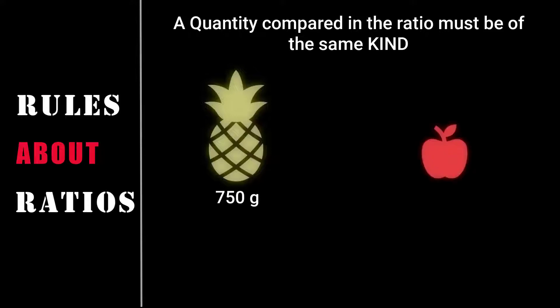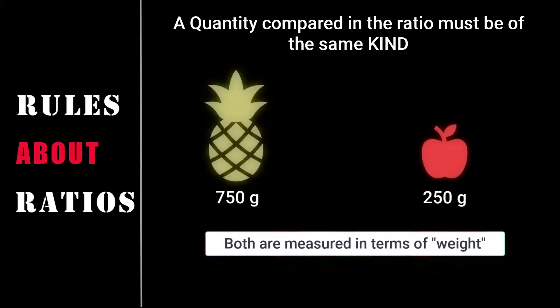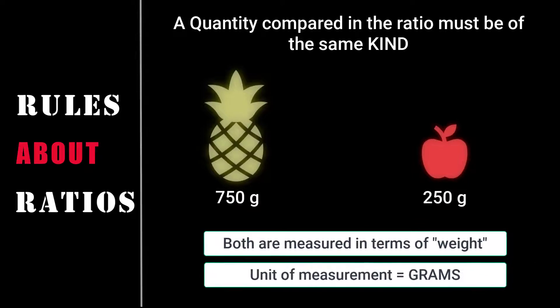A pineapple weighing 750 grams and an apple weighing 250 grams. Both correspond to the same quantity and they are of the same unit grams. And hence, they can be compared. So basically, to compare a given ratio, they have to be of the same kind.